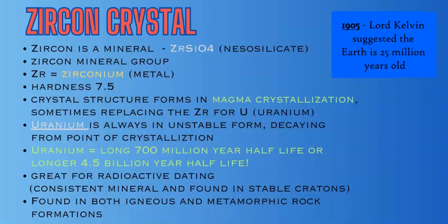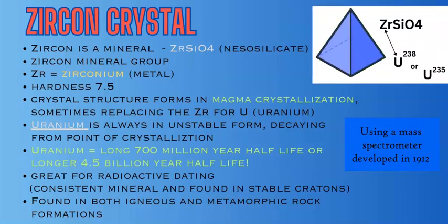Since 1905, when Lord Kelvin suggested the Earth was 25 million years old, radiometric dating has become much more advanced, using different elements to obtain a more accurate absolute age. One key mineral used is zircon crystal, a neosilicate mineral with the formula ZrSiO₄, which has a tetrahedral silica structure. It is composed of zirconium — a metal — and is a hard mineral at 7.5 on the hardness scale. It forms through magma crystallization during the formation of igneous rocks. Occasionally, uranium replaces zirconium in the crystal structure, and since all uranium is unstable, it immediately begins to decay as soon as it crystallizes — the clock starts ticking.